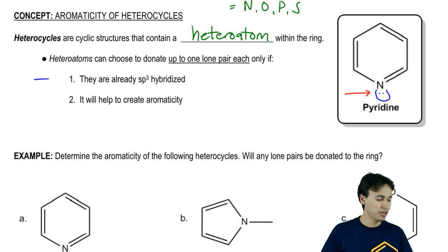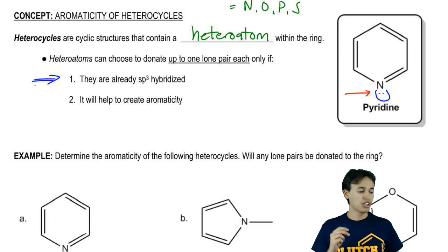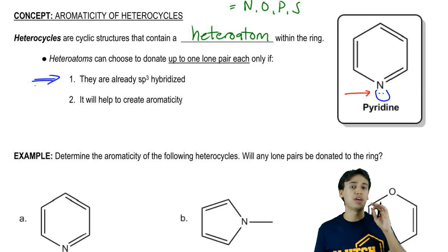Let's take a look. One, the oxygen or whatever heteroatom already has to be sp3 hybridized to do this. That means that if it was sp2 or sp hybridized, then that lone pair is definitely not getting donated. It's only getting donated if the atom was sp3 to begin with.